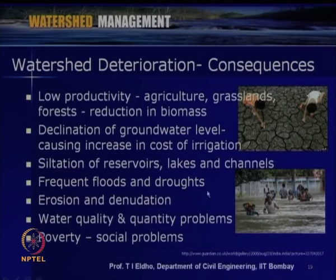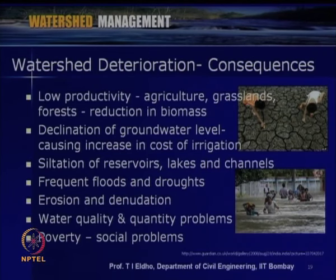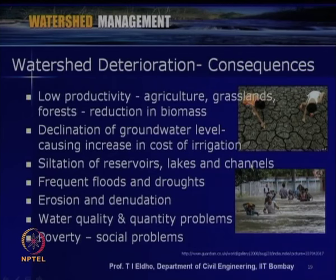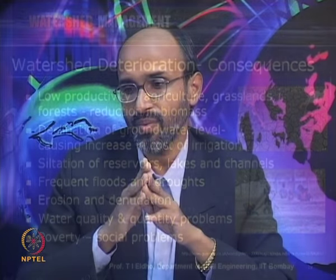Other consequences include erosion and denudation, where the overall contour of the watershed can change over time. As far as water is concerned, it is not only the quantity but quality is also a major issue — if available water is not of good quality for various uses, that will be another problem. All these can finally lead to poverty in the area and further social issues for the considered watershed. These are some of the important consequences of watershed deterioration.